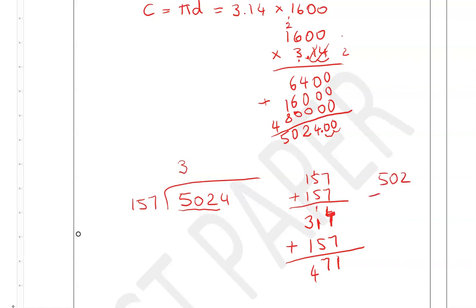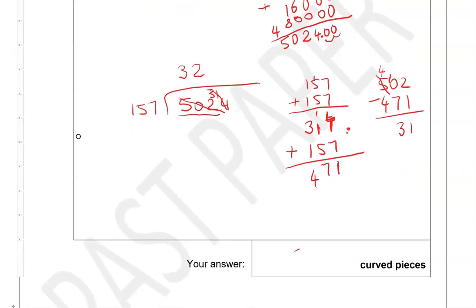So 502 take away 471, 2 take away 1 is 1, we need to borrow 1 here now from the 5, so 10 take away 7 is 3, 4 take away 4 is 0. So 31 is the difference, 31 remaining, so now it's a question of how many 157s fit into 314 and we've got it here from the previous calculation, so 2 lots of 157 is exactly 314, so we have nothing remaining. So the answer is 32, 32 curved pieces fit into the circumference.